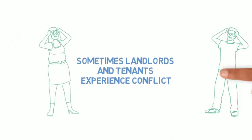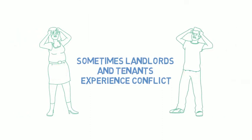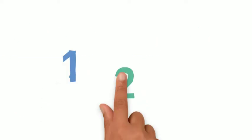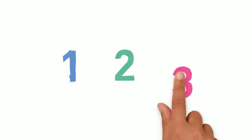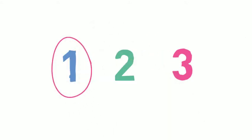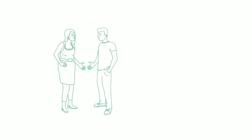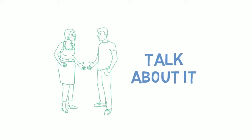Sometimes landlords and tenants experience conflict with each other for a variety of reasons. With a tenancy dispute, there are three ways to resolve it. Since each step gets more time consuming and straining on the relationship, we recommend you start with the first. The first and easiest step is to talk with each other about what is happening and see if you can identify solutions that would work for both of you.